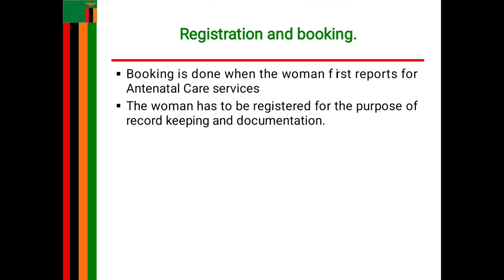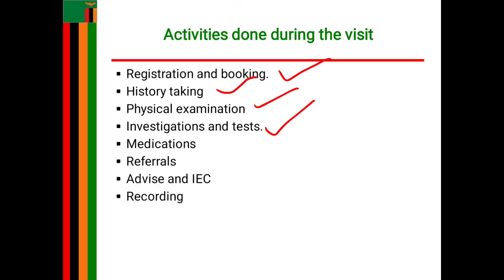Certain medications are also given during antenatal visits. For malaria prevention, the woman can be put on fansidar (sulfadoxine-pyrimethamine), but the dose should start in the second trimester because fansidar is not safe in the first three months. If the woman presents with malaria in the first trimester, she is treated with quinine even if it is not complicated malaria. If the woman is HIV positive, she is also put on ARVs together with septrin to boost the immune system.